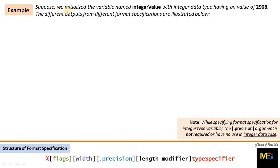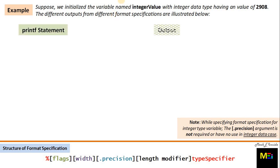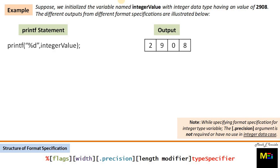The example is: suppose we initialize the variable named integer_value with integer data having a value of 2908. The different outputs from different format specifications are illustrated below. Let's look at the first printf statement — this is the default format specification passed without any optional argument, and the output we got is the value 2908 directly.